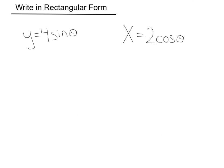Let's look at a different type of example here. Same goal, write in rectangular form. We've got the equations y equals 4 sine theta and x equals 2 cosine theta. This time, instead of a parameter t, we have a parameter theta.